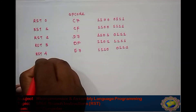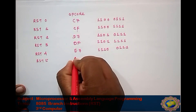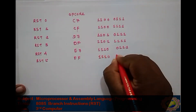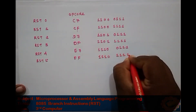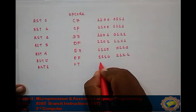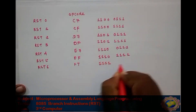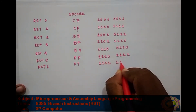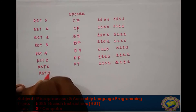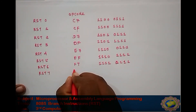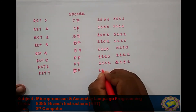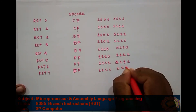RST 5 has opcode EF, giving binary 11101111. RST 6 has opcode F7, giving binary 11110111. RST 7 has opcode FF, giving binary 11111111.